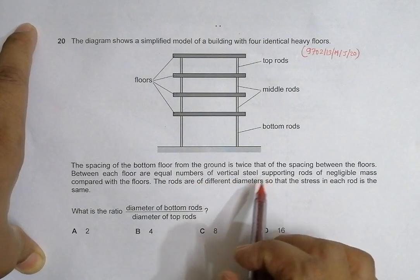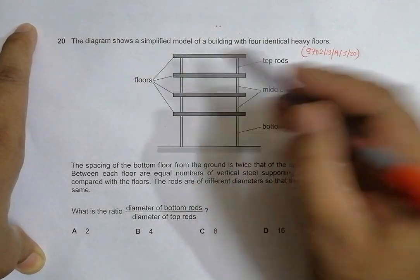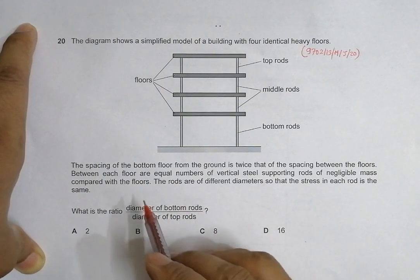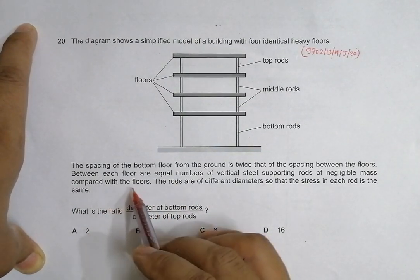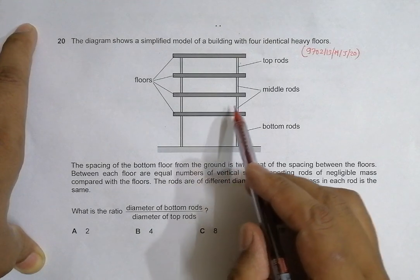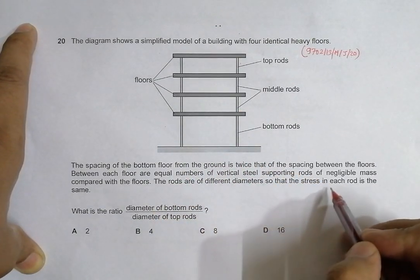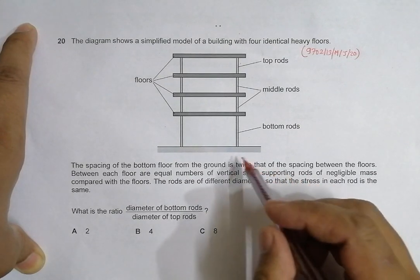Between each floor are equal numbers of vertical steel supporting rods. These rods have negligible mass compared with the floors. The rods are of different diameters so that the stress in each rod is the same.